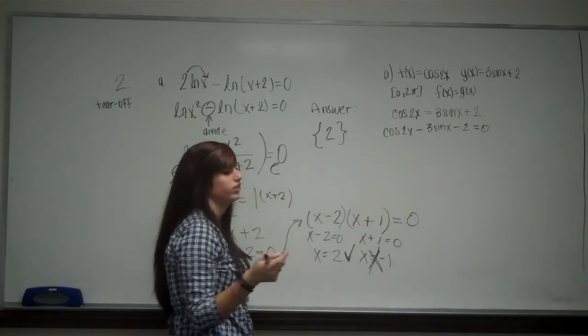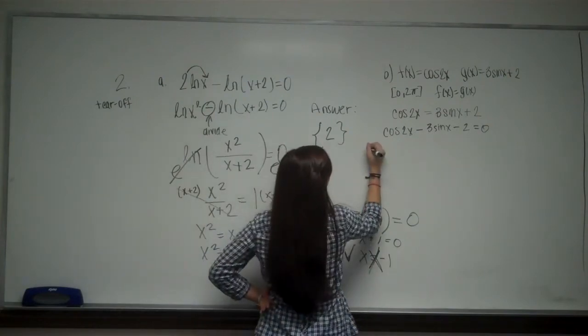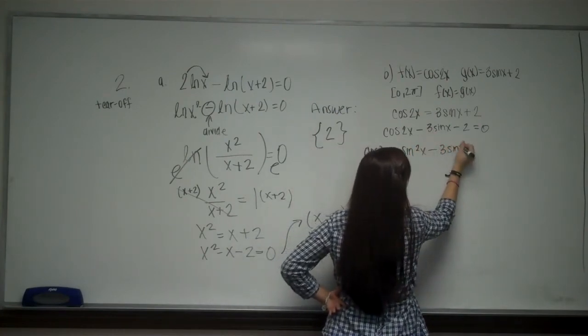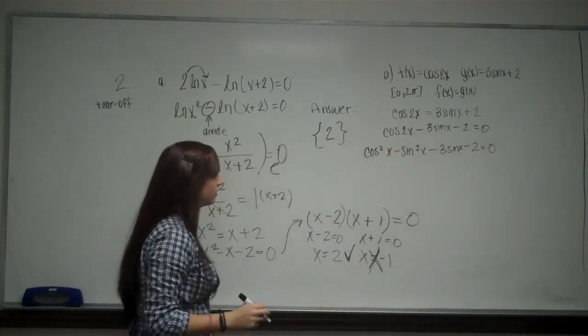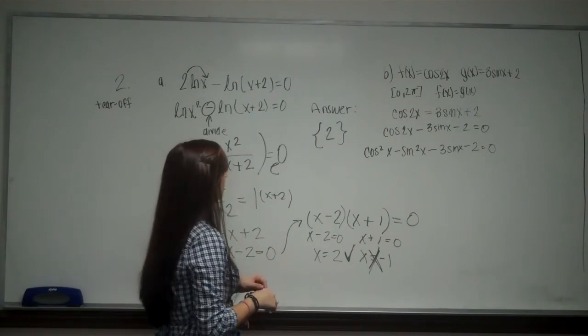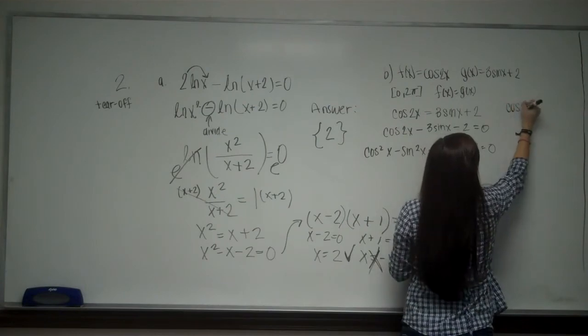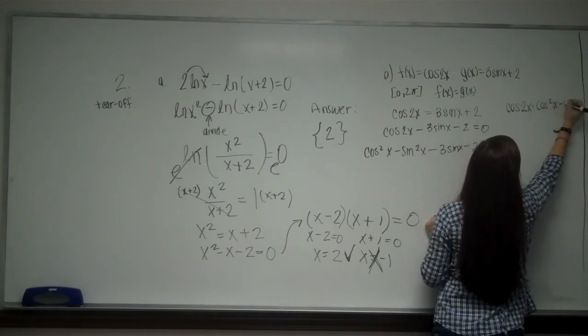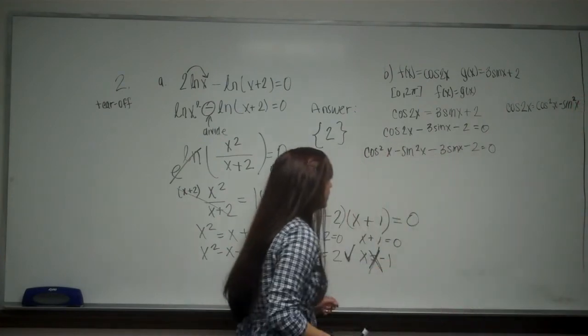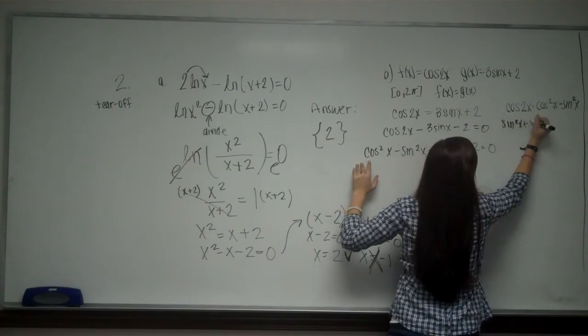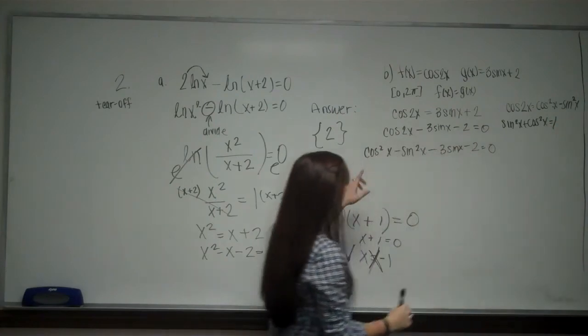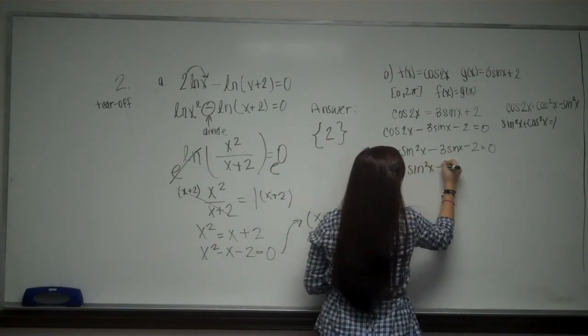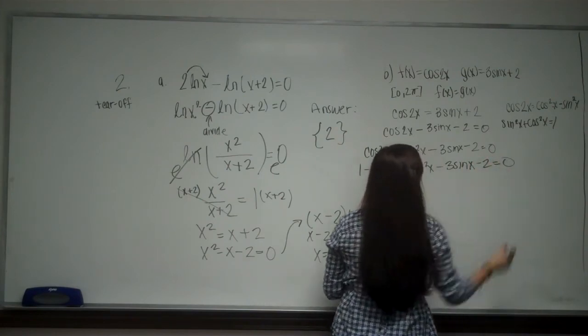Now for this cosine of 2x, we don't really know that that is very easily, but we know an identity. And that's cosine squared x minus sine squared x. And then I have the rest minus 3 sine x minus 2 equals 0. So for here, we're just using identities. We're using the fact that cosine 2x equals cosine squared x minus sine squared x. So cosine x, we also know that sine squared x plus cosine squared x equals 1. So cosine squared x can also be 1 minus sine squared x minus sine squared x minus 3 sine x minus 2 is 0.